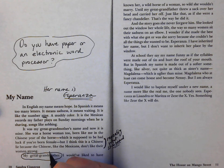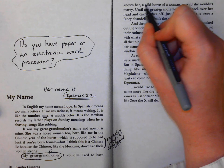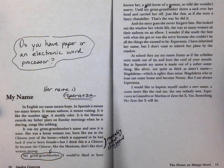I would have liked to have known her. A wild horse of a woman. Wild horse of a woman, I like that alliteration. So wild she wouldn't marry until my great-grandfather threw a sack over her head and carried her off, just like that, as if she were a fancy chandelier. That's the way he did it. And the story goes, she never forgave him.